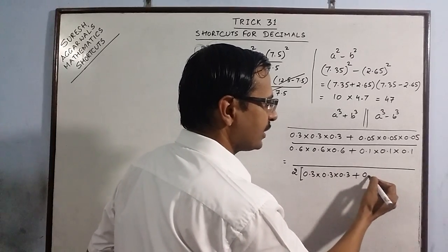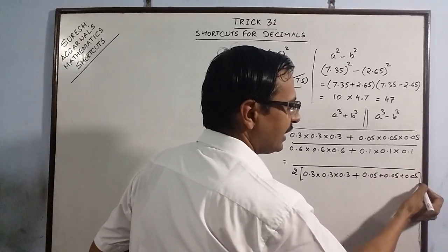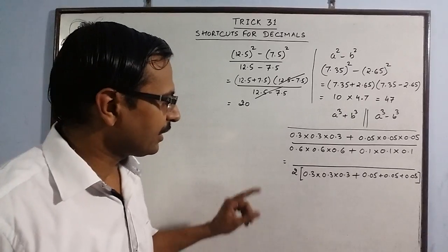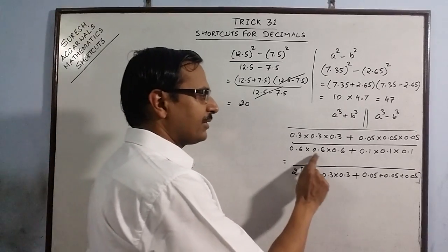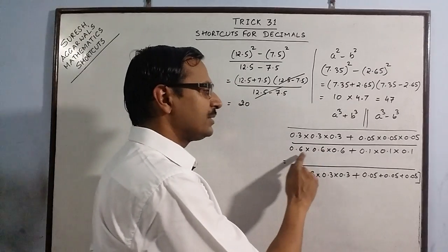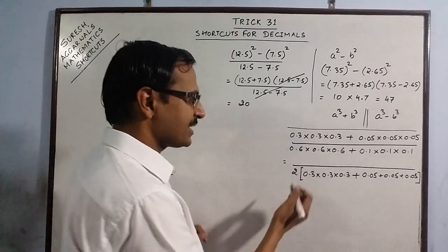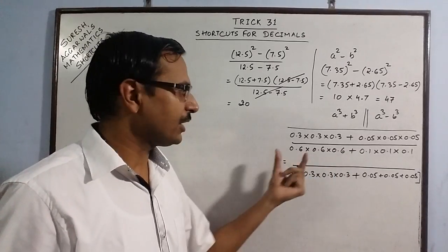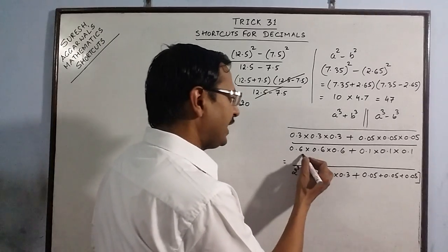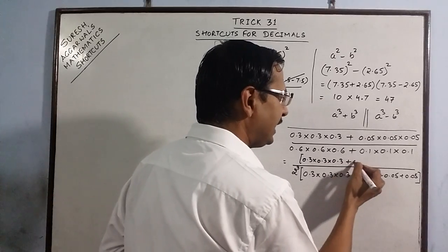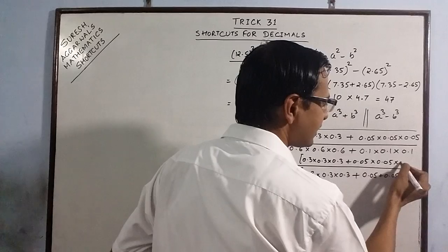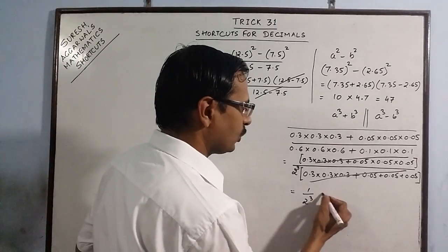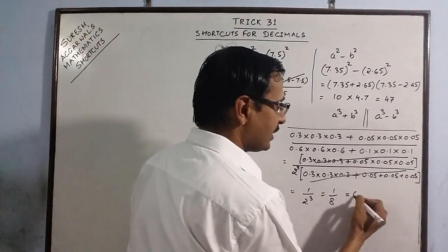We have 0.3 and 0.05 three times in the numerator. We take 2 common from each of the three terms, giving us 2 raised to the power 3. The numerator factor cancels with what remains in the denominator, and you have the final answer as 1 upon 2³, which is 1 upon 8, or 0.125 in decimal form.